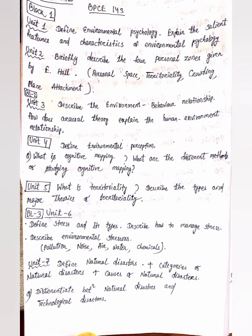In Unit 2, the question is: briefly describe the four personal zones given by E. Hall. The four personal zones are personal space, territoriality, crowding, and place attachment. In Unit 3: describe the environment-behavior relationship and how does arousal theory explain the human-environment relationship.